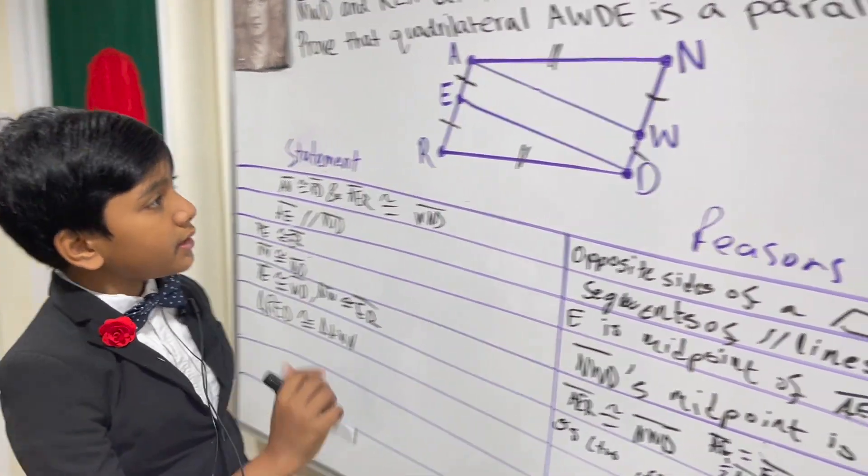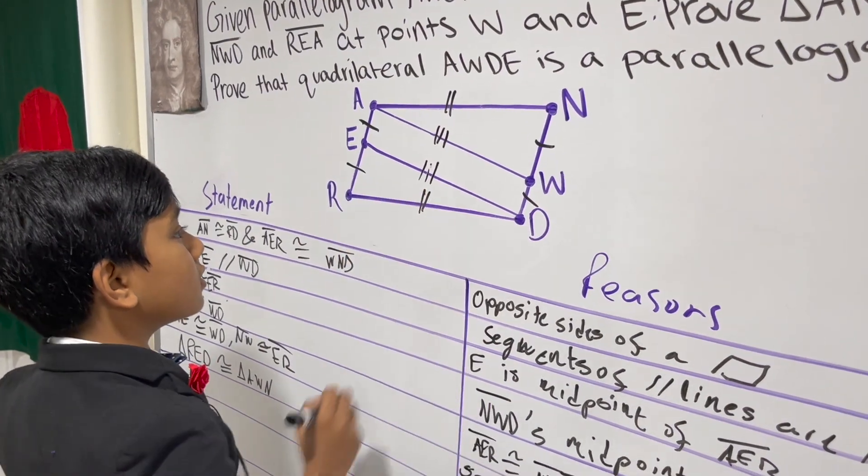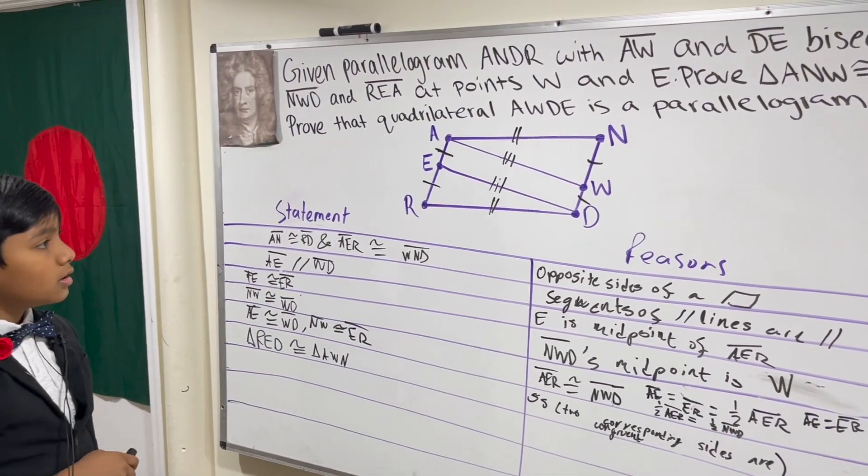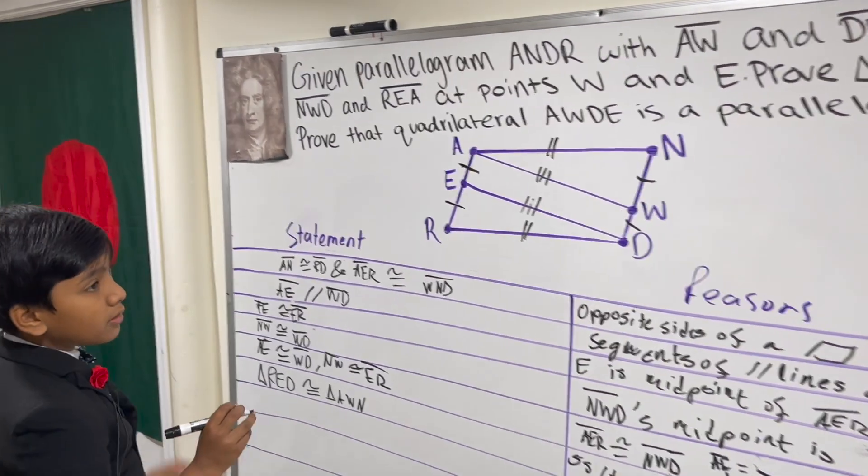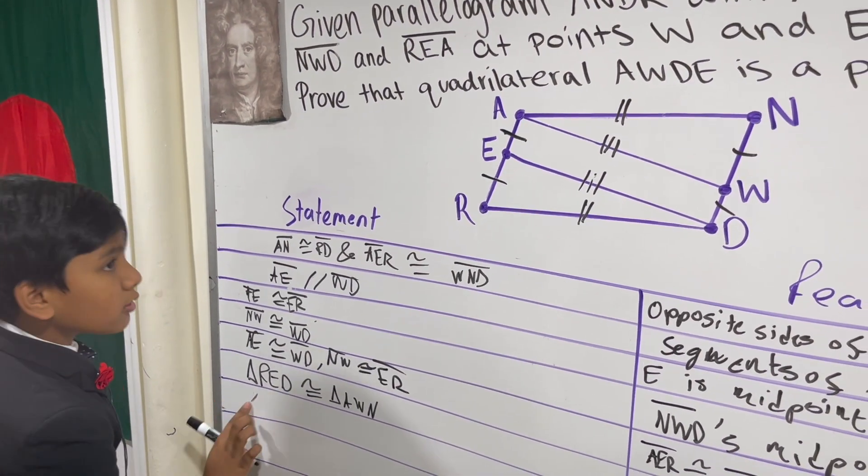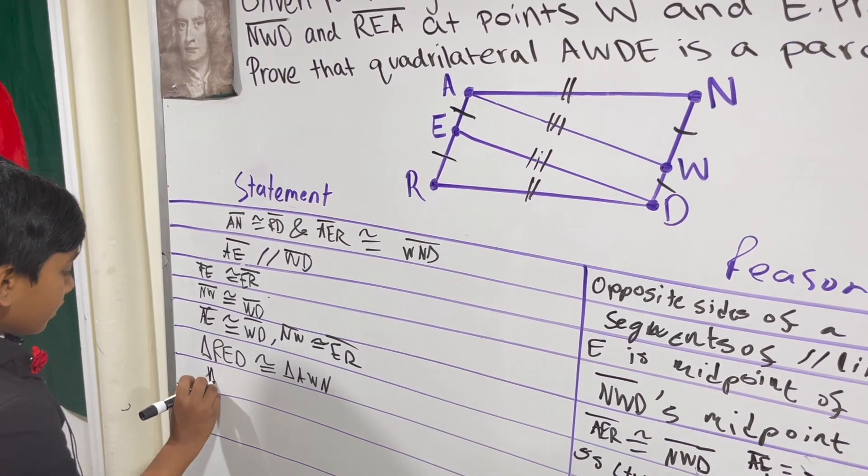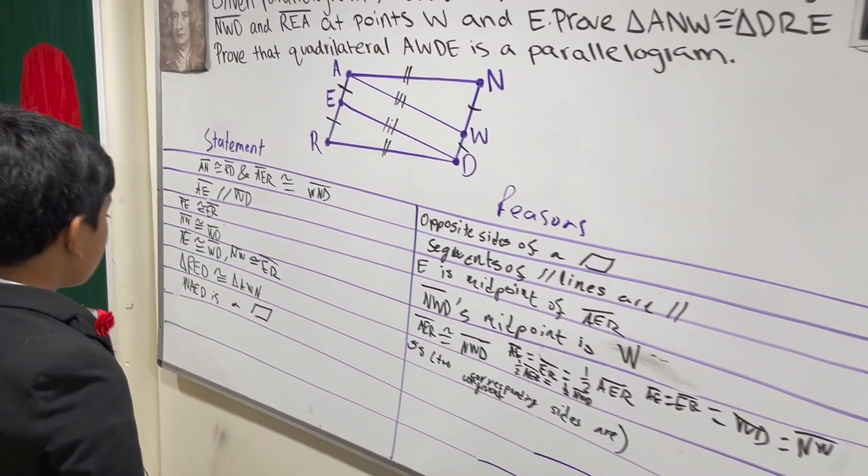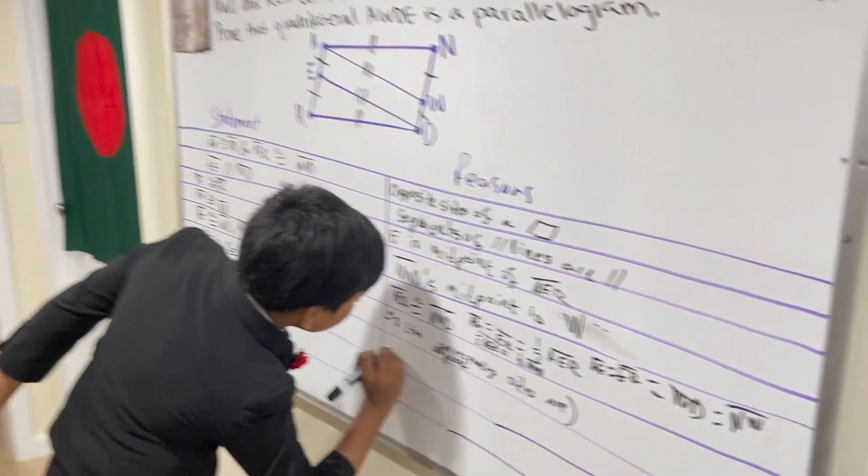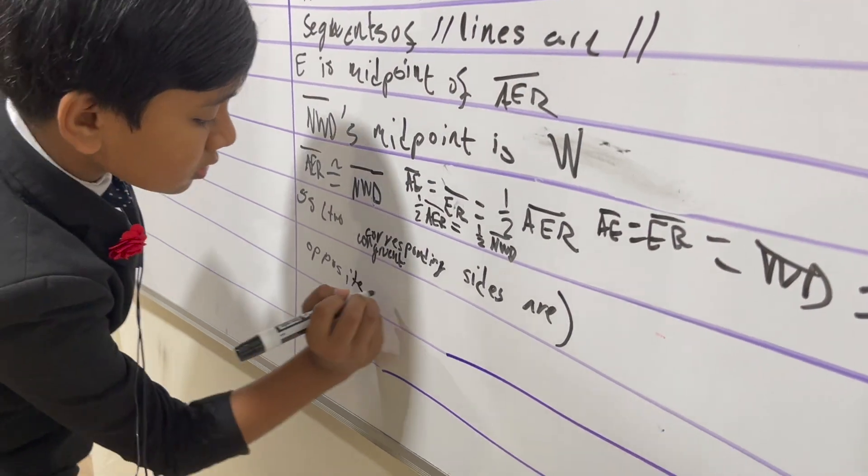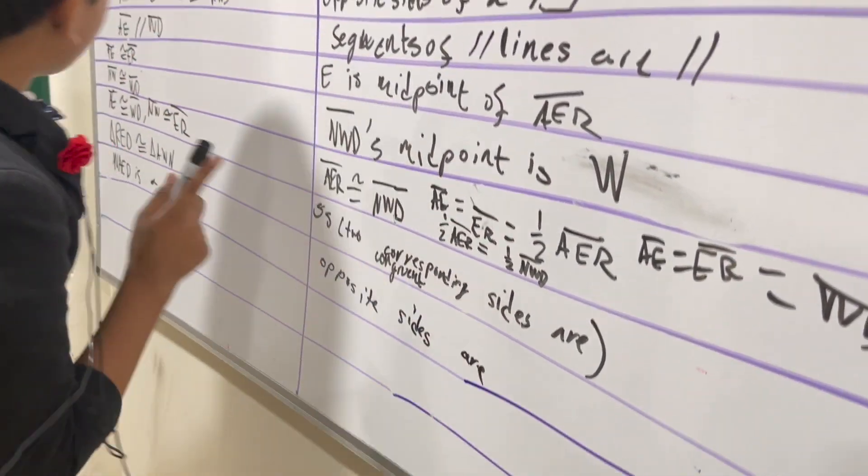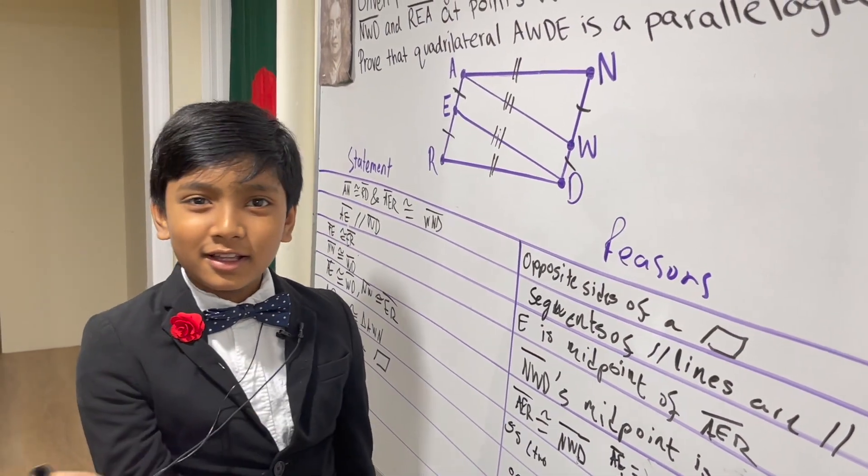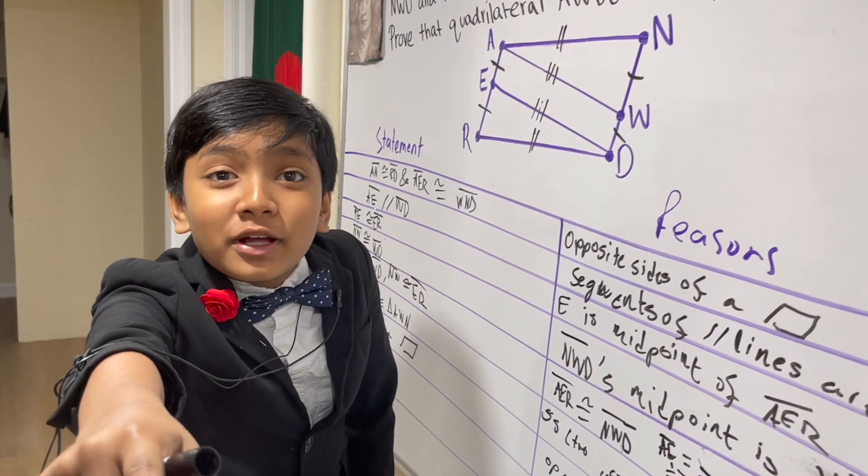So that means these are equal as well. Wait, wait, wait. We know this. What? So that means that we know that quadrilateral AWED is a parallelogram. Why is that? Well, it's because opposite sides are parallel. What the... Parallel? Did one of you two try to sabotage me? My mom told me... You... My mom... Go to the principal's office right now.